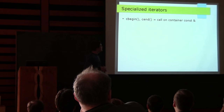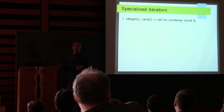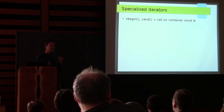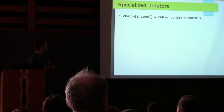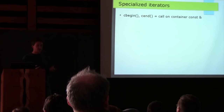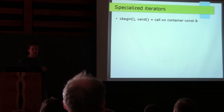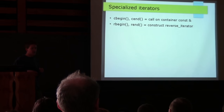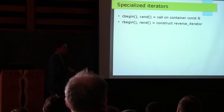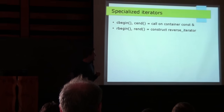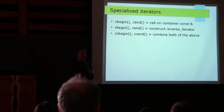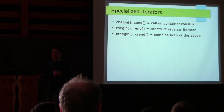For specialized iterators, we have cbegin and cend — the goal is to make sure we get a const iterator no matter what type of container we call it on. As long as we have a const argument, we can just call begin on it and get a const iterator. rbegin and rend are defined as constructing the reverse_iterator type from the other iterators. crbegin and crend are a combination of the two above.